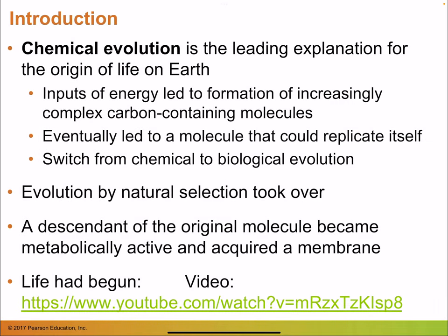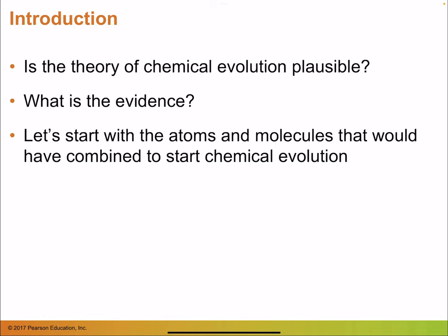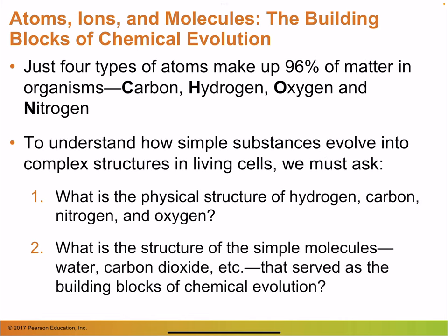That video goes through the basics of chemistry and how these molecules came together. Particularly interesting is the culmination showing how phospholipid or fatty acid chains come together to make a little ball that looks like a precursor to a cell. So is this a plausible theory? That's where we get into chemistry. There are four main types of atoms that make up 96% of all living organisms — I call them CHON: carbon, hydrogen, oxygen, and nitrogen.